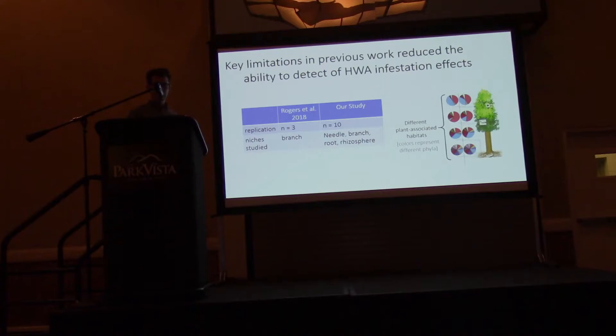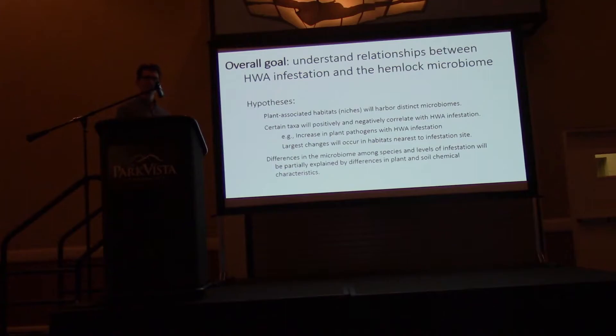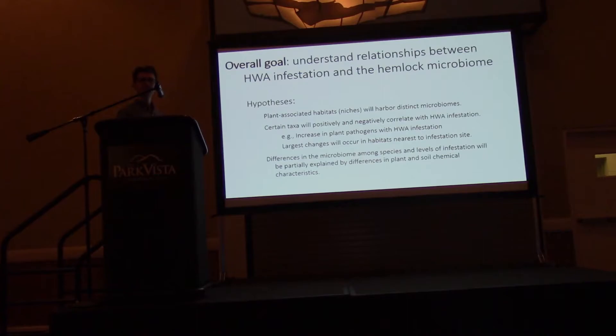We tried to increase the scope and robustness of this study by increasing replication to increase statistical power, but also by looking at these different plant-associated habitats or niches. Our overall goal is to understand the relationships between the hemlock microbiome and hemlock woolly adelgid infestation. We had a couple of hypotheses — one being that, as with other plants, plant-associated habitats or different niches will harbor distinct microbiomes.